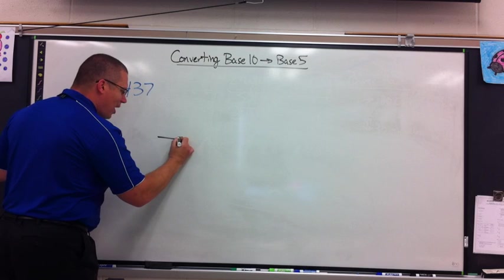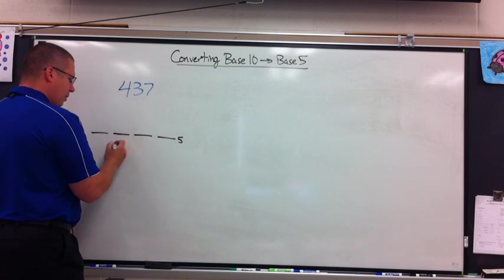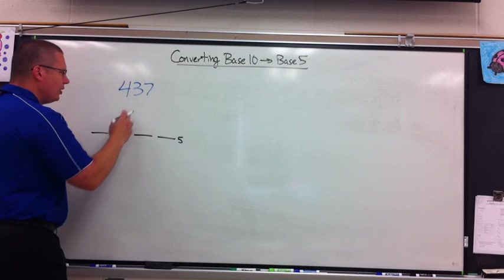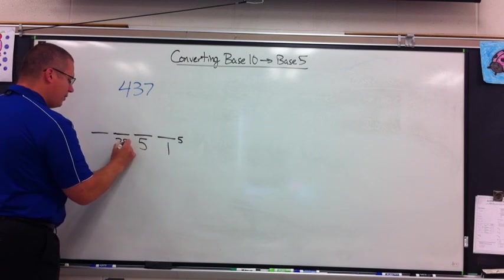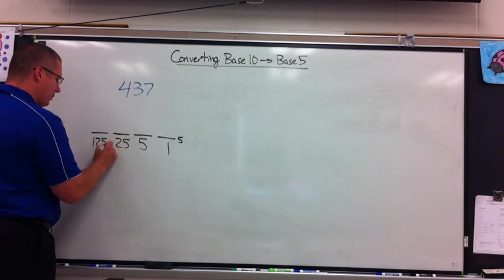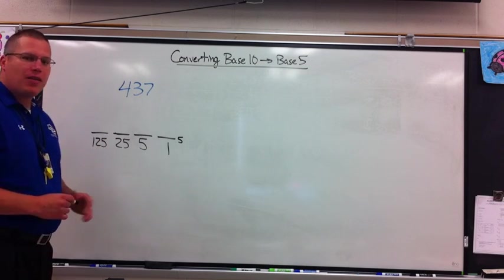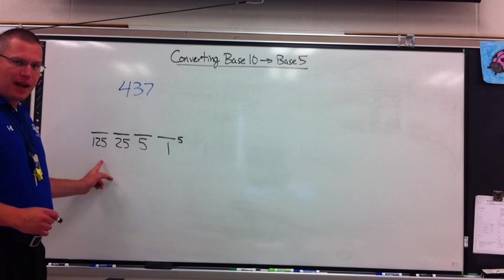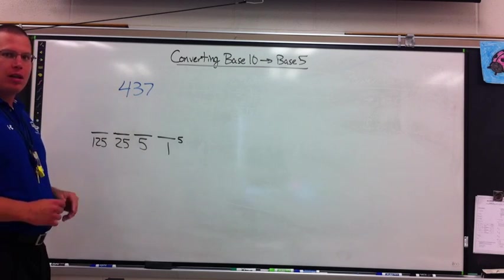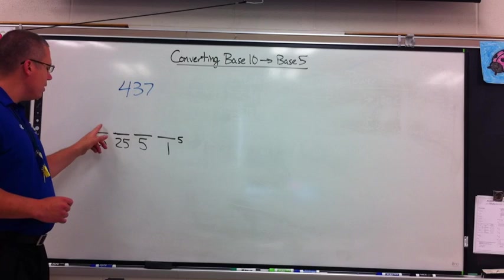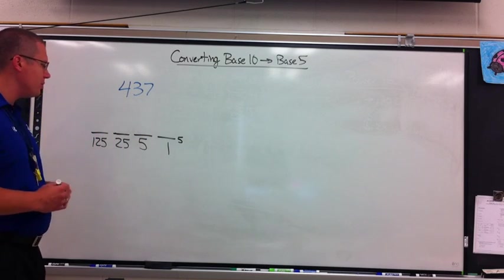You have to remember that in base 5 the place values are different. So I can't use 10s or 100s, but I'm allowed the 1s, 5s, 25s, and 125s. What I have to figure out is how many of each place value it will take to make up 437. And none of the digits I put here is allowed to be 5 or higher — those are illegal digits.